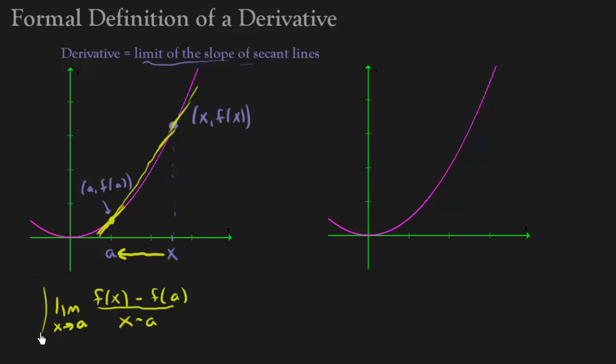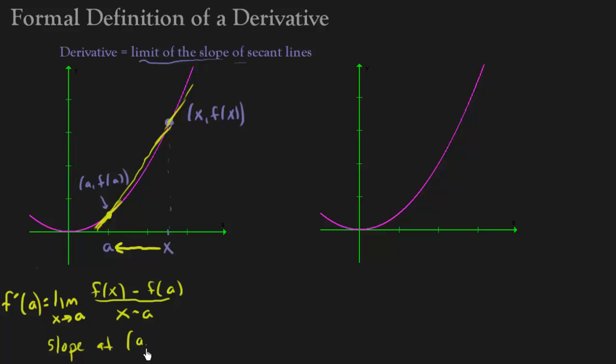Why don't I take the limit as x approaches a, and I'll actually get the real slope. Right here, this is our first definition of a derivative. And we denote that by using the notation f with this little apostrophe here that's called prime. We would say f prime. And that's going to equal this. And again, that's going to tell us the slope at a, f of a.